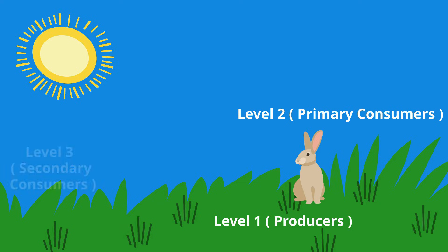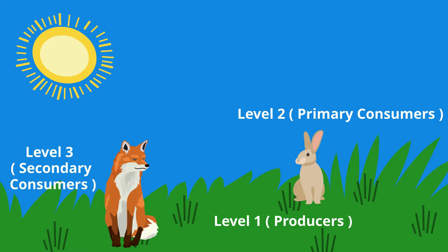Level 3 is made up of secondary consumers. They consume level 2 animals. Carnivores who are meat eaters and omnivores are found on level 3. For example, foxes eat rabbits.